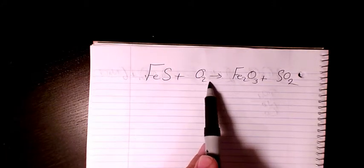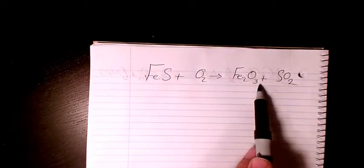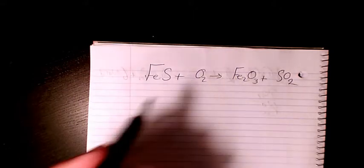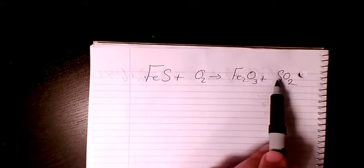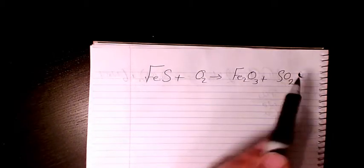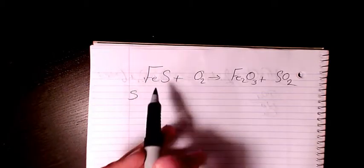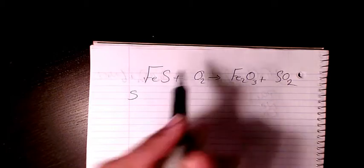So I start with S. S is balanced, one in this side, one in this side, so that's balanced already. Fe, one in this side, two in this side.